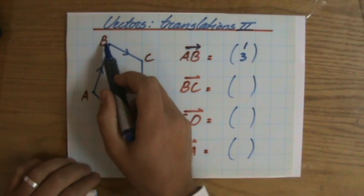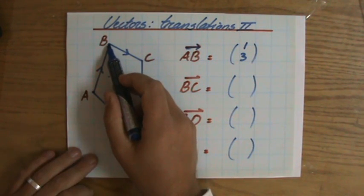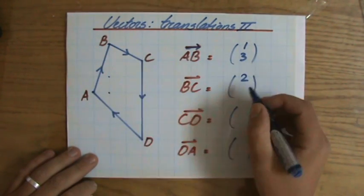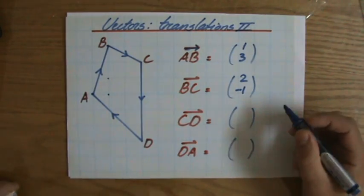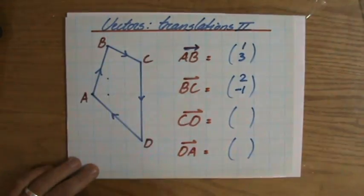From B to C, again, first it's the horizontal translation, two, let me put a two there, and then I'm going minus one up there, which means, of course, going one down. So that's why it's a negative one. It's two, minus one, good.